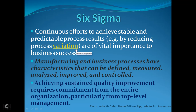Manufacturing and business processes have characteristics that can be defined, measured, analyzed, improved, and controlled. Six Sigma works through these five stages, which will be discussed a little bit later.